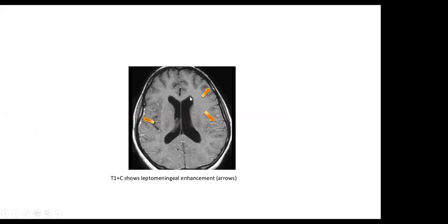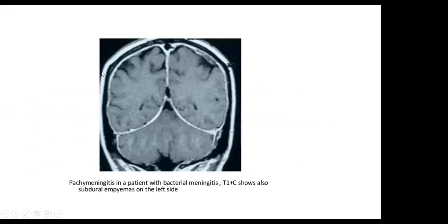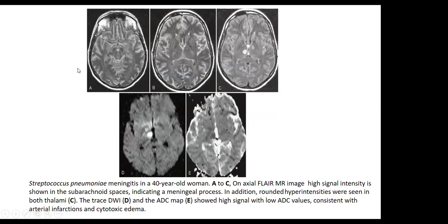T1 contrast in meningitis shows leptomeningeal enhancement. In another case — pachymeningitis — there is dural enhancement and a small amount of left subdural collection. Another case of meningitis on FLAIR sequences shows hyperintense signals in the sulci and subarachnoid spaces. DWI and ADC map show restricted diffusion, consistent with subacute infarctions secondary to arteritis or vasospasm as a complication of meningitis.